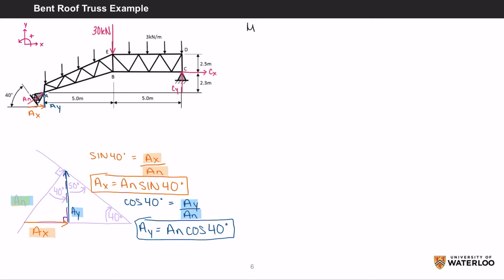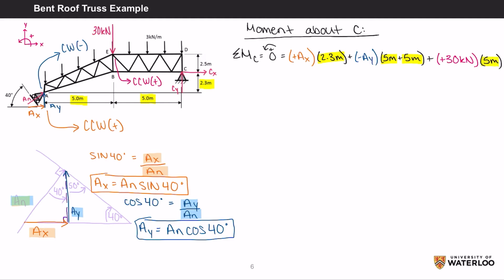Now we can write out the moment equation. Remember, moment is equal to the force times the perpendicular distance. The moment about C equals zero, which equals positive AX times 2.3 meters plus negative AY times 10 meters plus positive 30 kilonewtons times 5 meters.